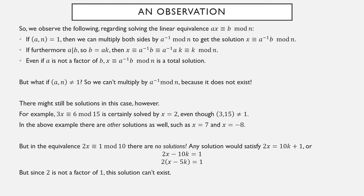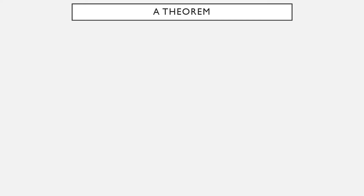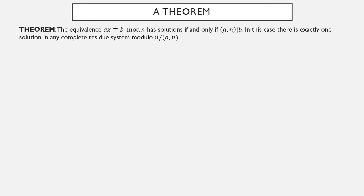3x ≡ 6 mod 15 does have solutions though 3 and 15 are not relatively prime. But in general, if ax ≡ b mod n and a and n are relatively prime, then multiplication by the inverse is a quick way to find the solution. Let's try to establish what the difference in those examples was. The equivalence ax ≡ b mod n has solutions if and only if the greatest common divisor of a and n is a factor of b. If this holds, there is one solution modulo n divided by that GCD.